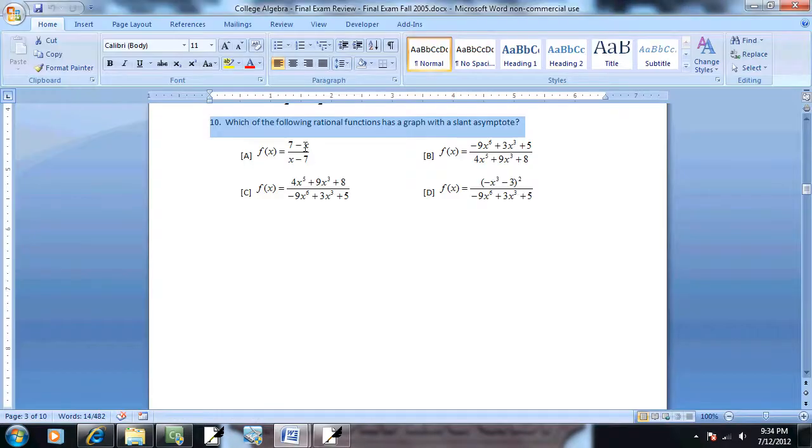So as I look at this one, part A, this is x the first and then x the first down here. So degree of the top is one, degree of the bottom is one. So A does not have a slant asymptote.